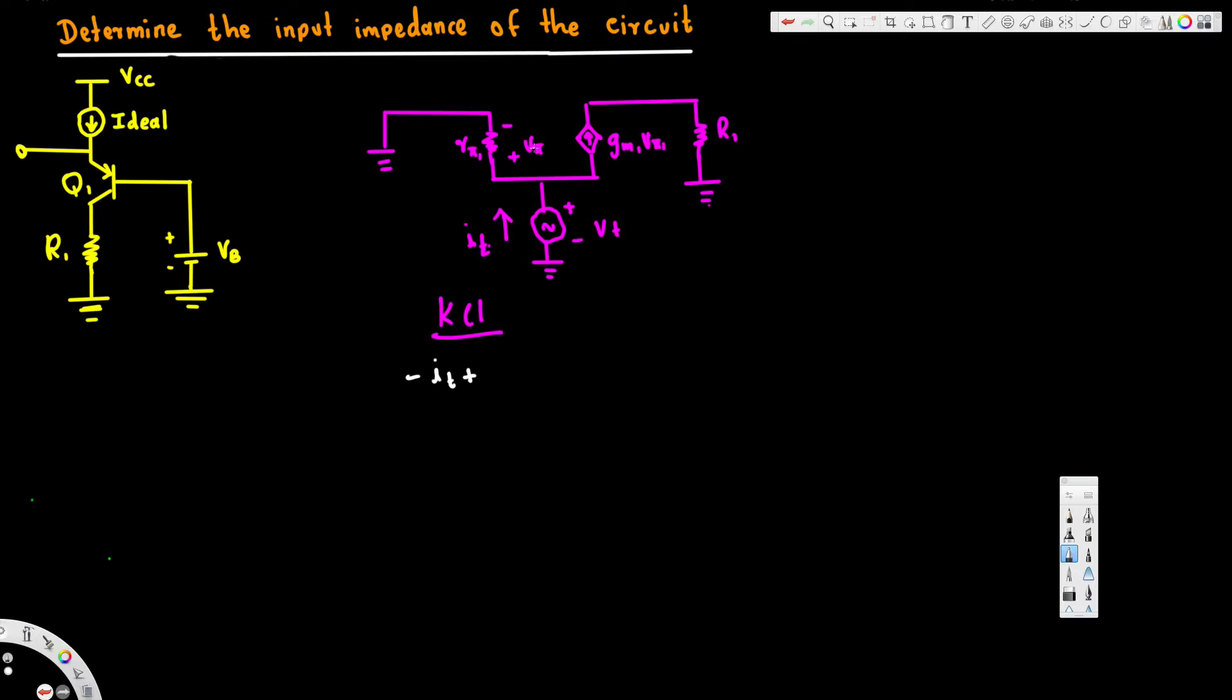Here we have v51 over r51, that's one current, and then gm1 times v51 is another current.